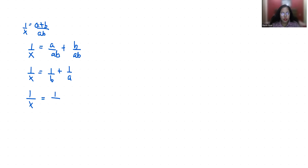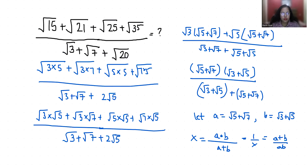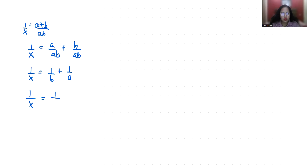So B is √3 + √5 and A is √5 + √7. Therefore 1/X equals 1/(√3 + √5) + 1/(√5 + √7).